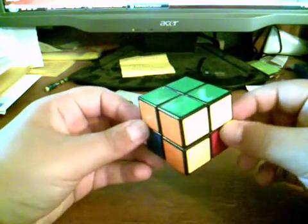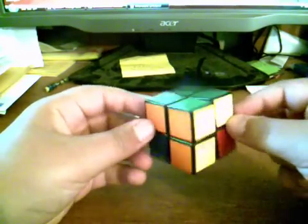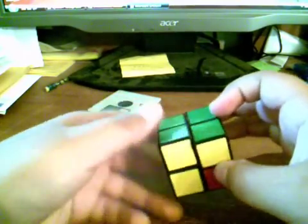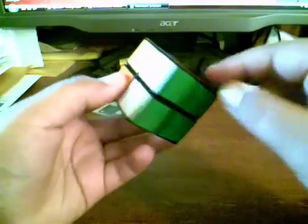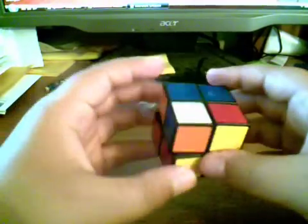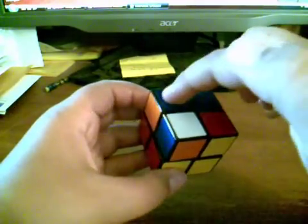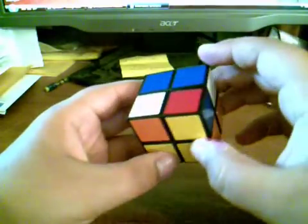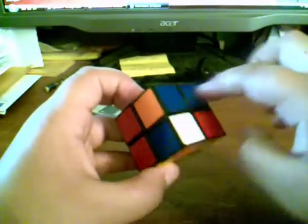Alright, for the other layer, all you do is turn the cube over so that the solved layer is on the bottom, like this. So now you want to get the opposite color side done. So for instance, I have to get the blue side.